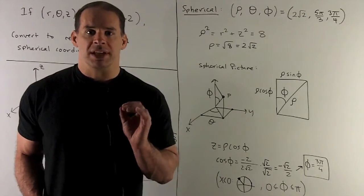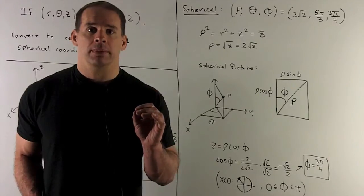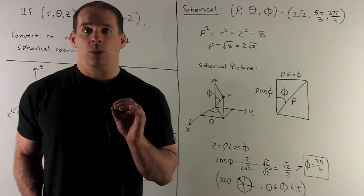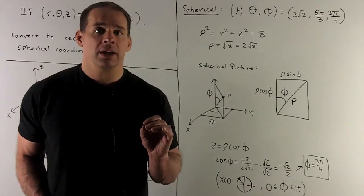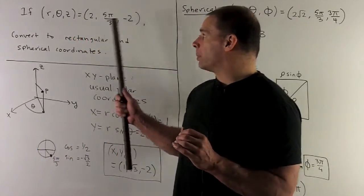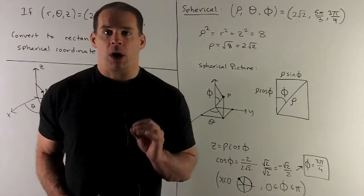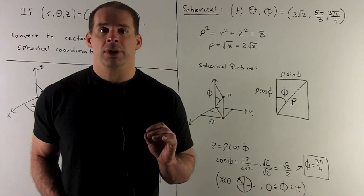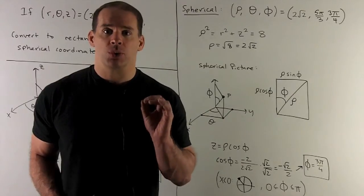Rho is going to be the distance from the origin to our point. In cylindrical, that's going to be rho squared equals r squared plus z squared. So it's going to be equal to 4 plus 4. Take the square root. That's going to be square root of 8 or 2 square roots of 2. So that's our rho, 2 square roots of 2.